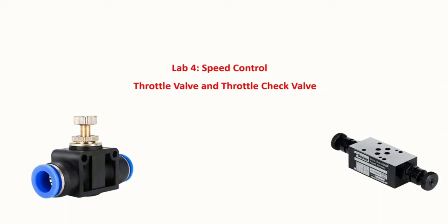With this concept in mind, in this lab we want to design two different circuits. First, we look at how the opening level of a throttle valve can affect the speed of a single acting cylinder. Then we look at the throttle check valve and see how it gives us different speeds for advancing and retraction of a piston inside a double acting cylinder.